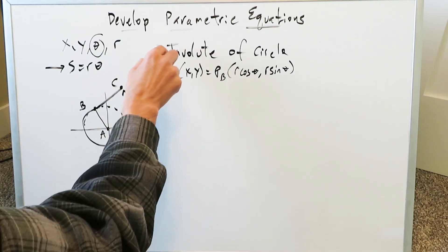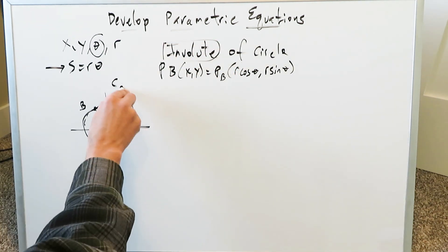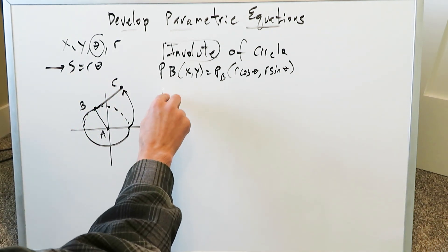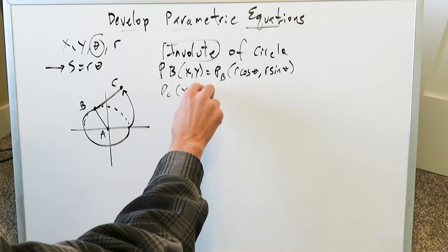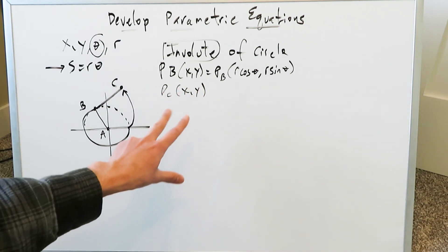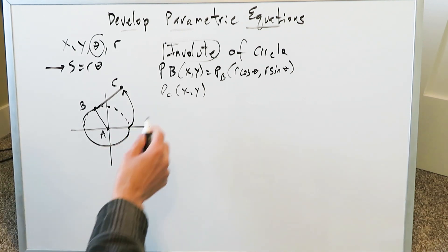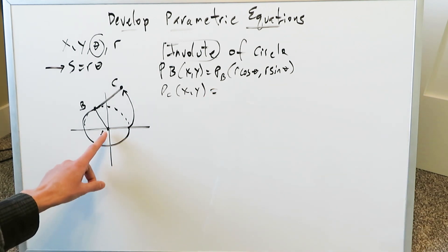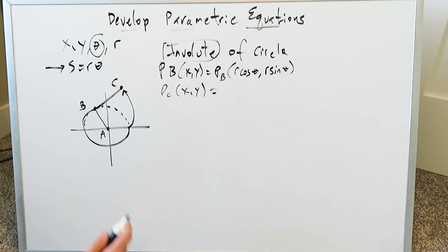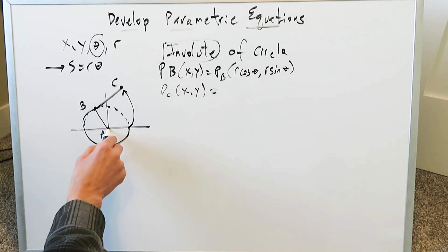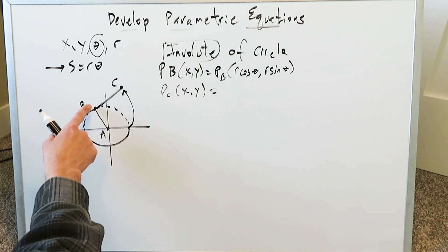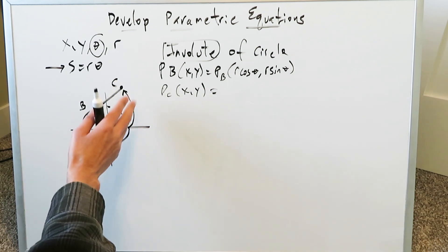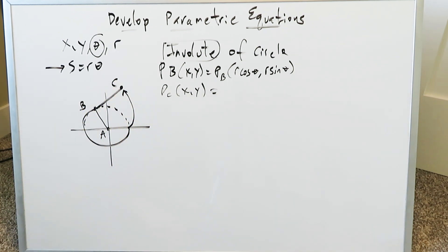When developing the parametric equations for this involute of the circle, we're looking at point C, because point C will be any point on that involute as it develops. Point C will have a certain X and Y value which has to be determined, and the parametric equations will represent these values. If you think about everything in terms of X components and Y components from the origin, from A to B we have a certain X dimension and a certain Y dimension. From point B to C, we have a certain X dimension away and a certain Y dimension away.